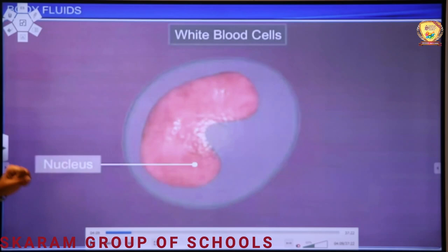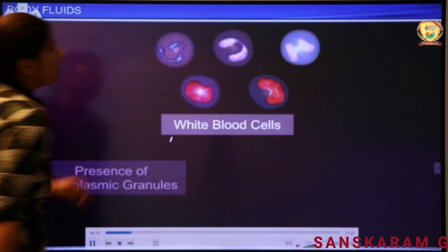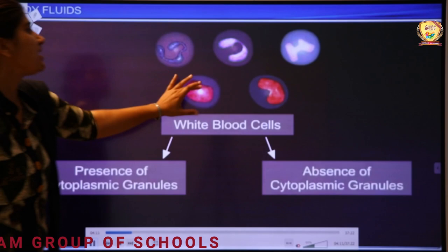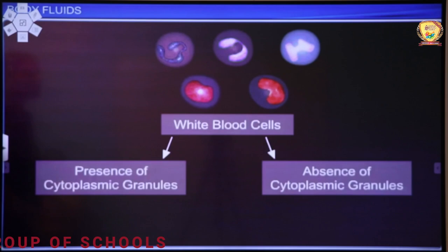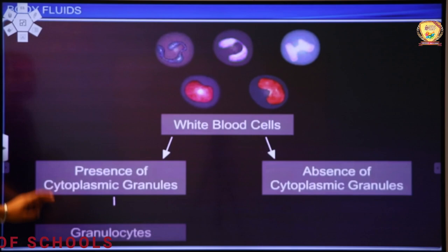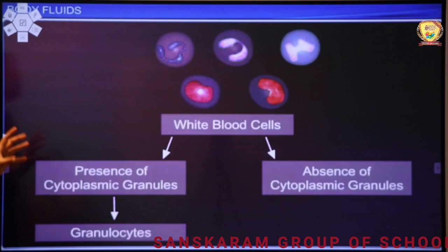Talking about the types of WBCs — there are five types visible. At the top are granulocytes; these are agranulocytes; these are monocytes. They are divided into two types based on the presence of cytoplasmic granules. If granules are present in the cytoplasm, they are called granulocytes; if granules are absent, they are called agranulocytes.